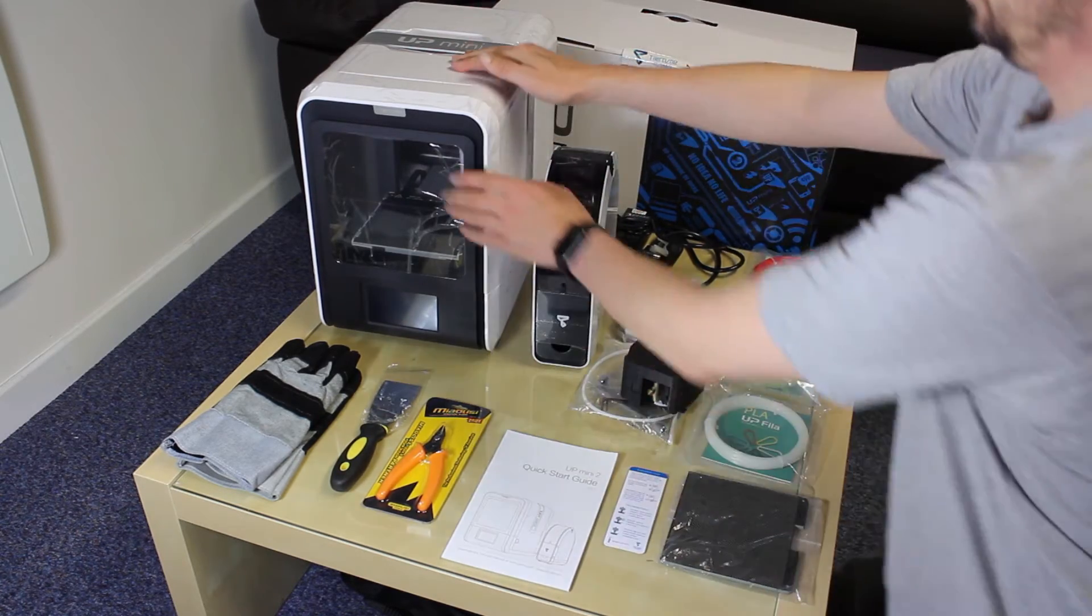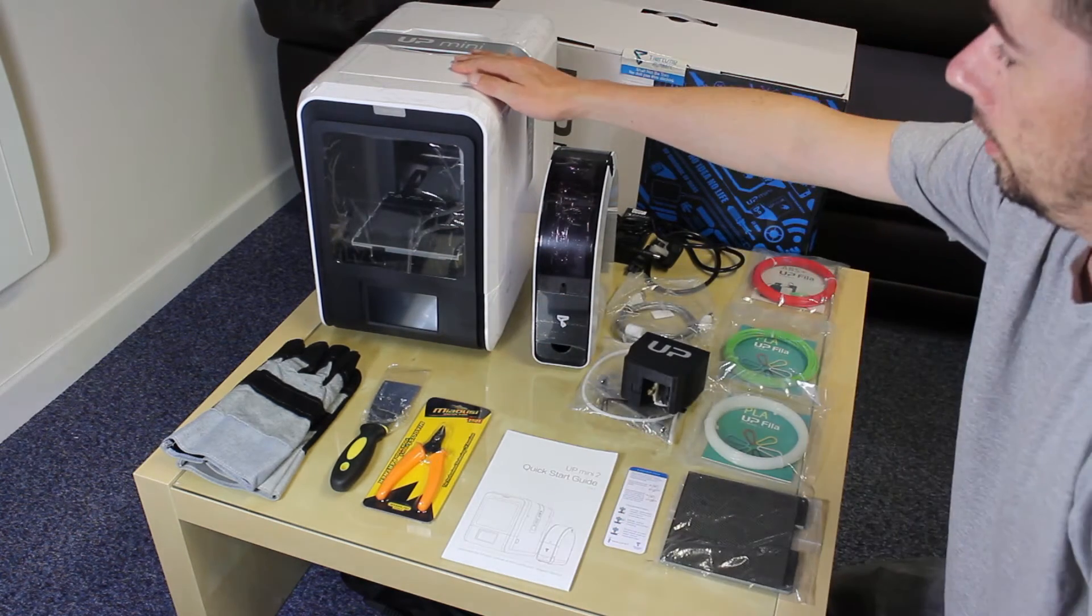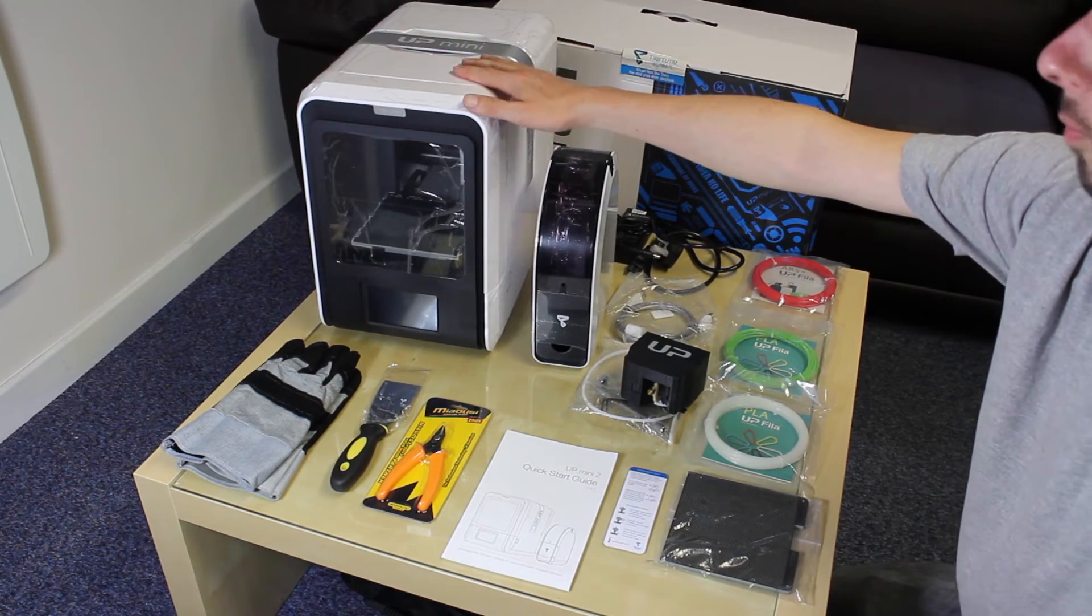Next up you have the printer. You've got a full color LCD touch screen in here which we'll show you in a little while. It also comes with built in Wi-Fi.